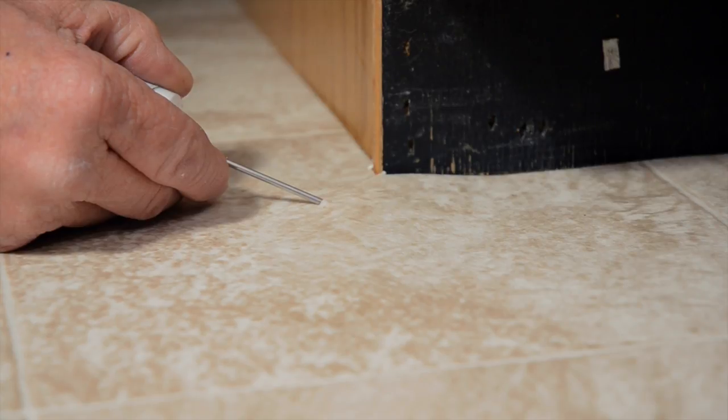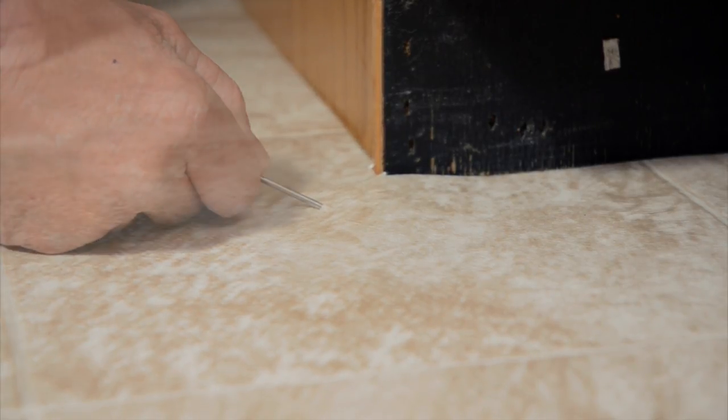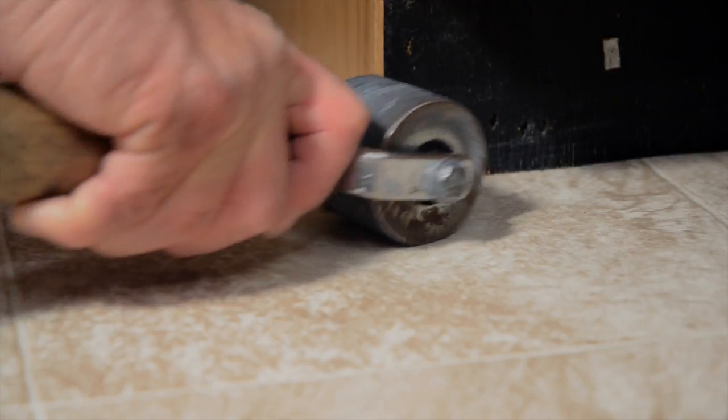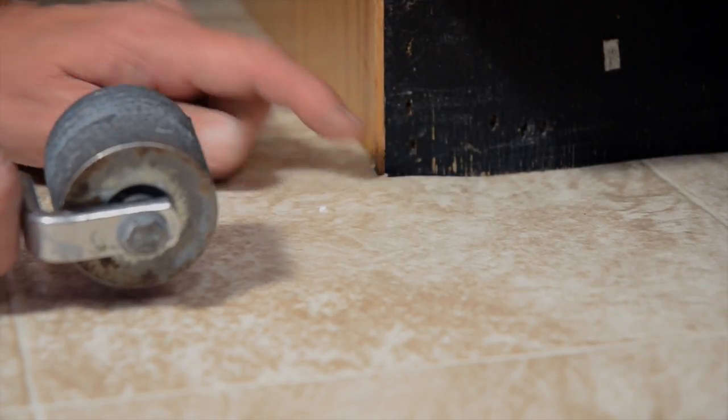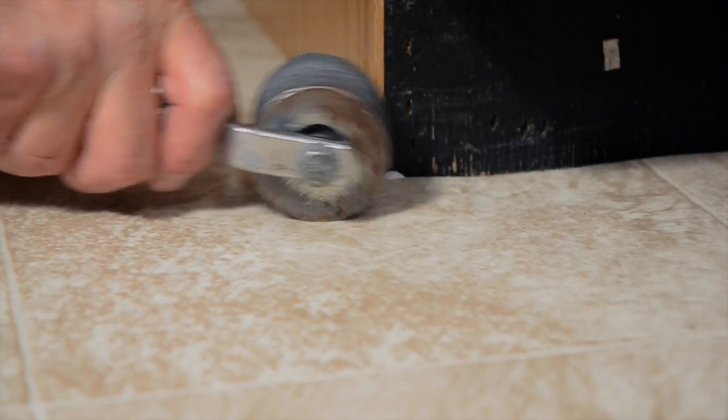Inject the seam sealant into the space. Using a seam roller, roll from the far side of the bubble toward the edge of the flooring. Work the roller in different directions to spread the sealer evenly underneath.